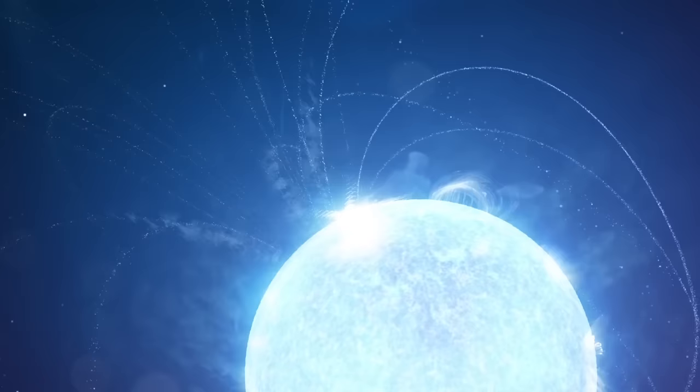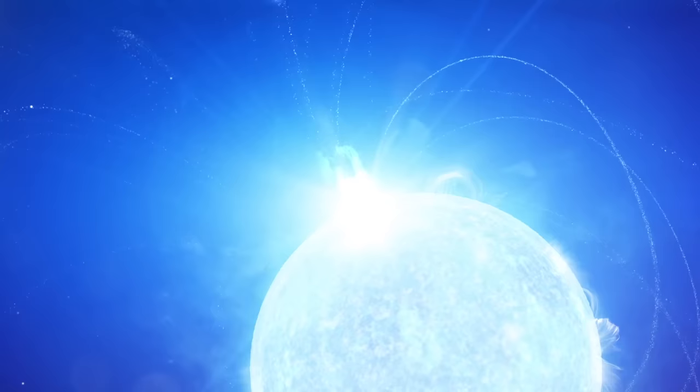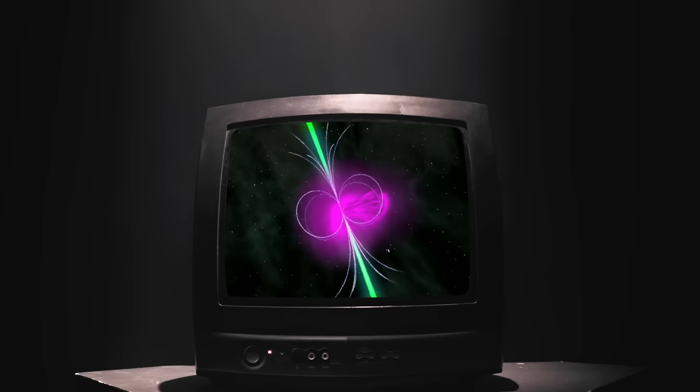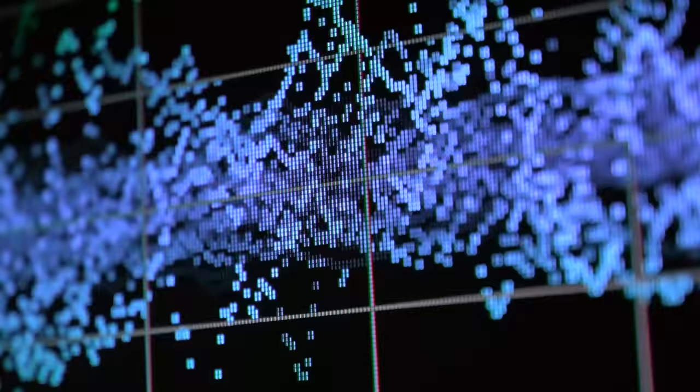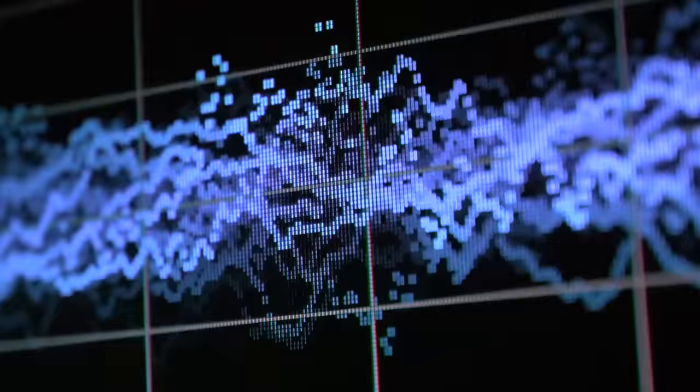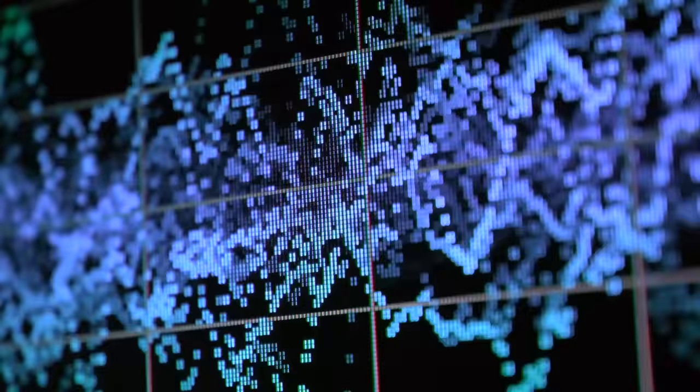Another explanation researchers offer is that the object could be an ultra-long period magnetar, a rare type of neutron star with extremely strong magnetic fields that can produce powerful bursts of energy. But until recently, all known magnetars released energy at intervals ranging from a few seconds to a few minutes. That's far more often than the 22-minute intervals that this object emits radio waves.